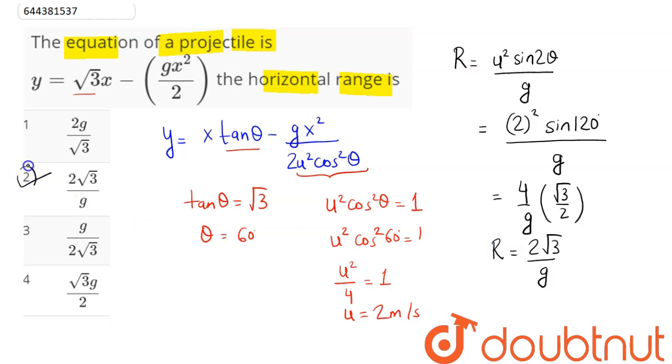So, 2 root 3 by g means option number 2 is the correct answer, hence 2 is our answer.